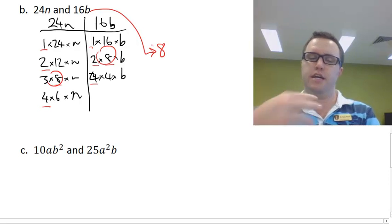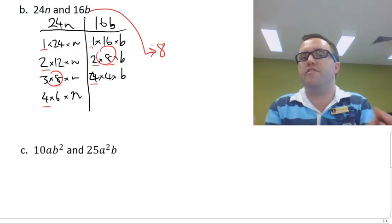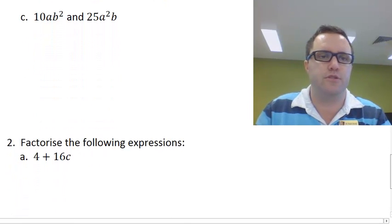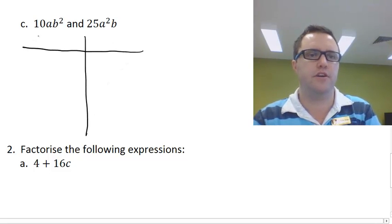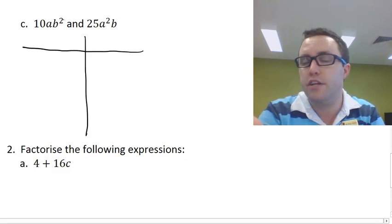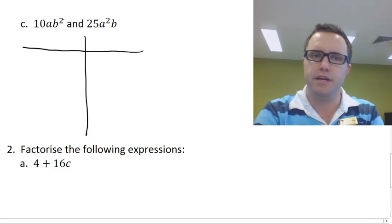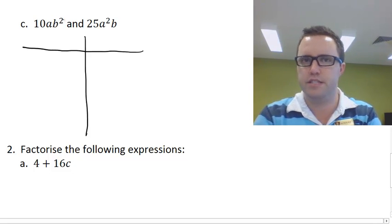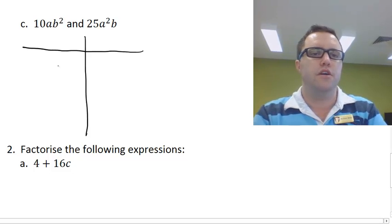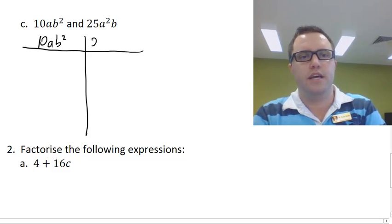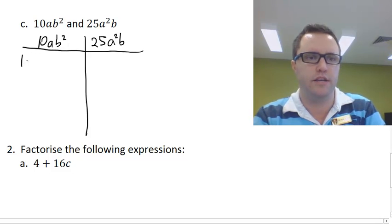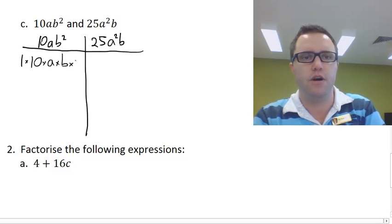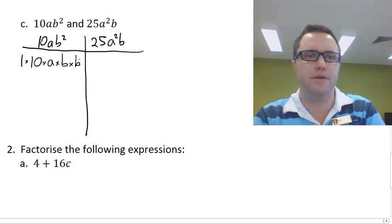So far you've seen it just happening with the numbers only. We haven't worried about the factors happening in the variables. So let's have a look at one where the variables do come into play, 10AB squared and 25A squared B. Let's draw up our table. To get 10AB squared, we could go 1 times 10 times A times B times B. It's very important that we break this B squared up into B times B.